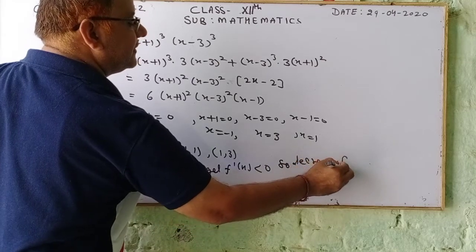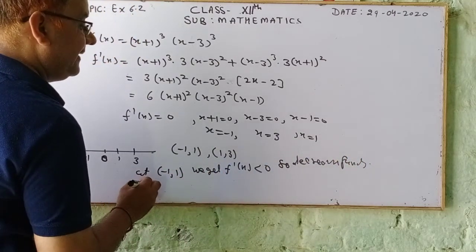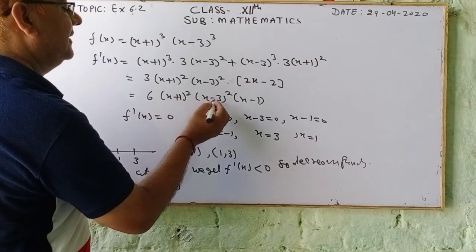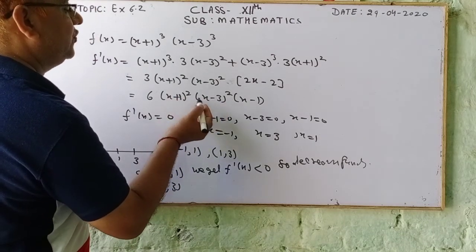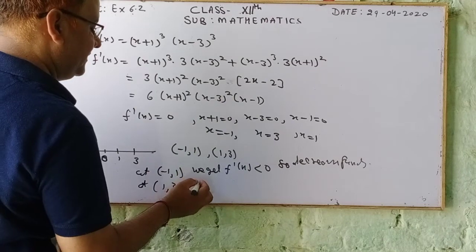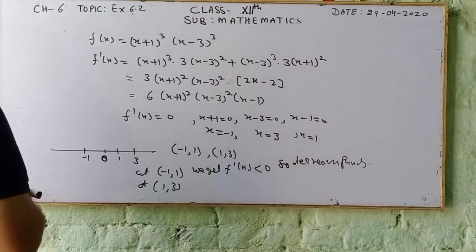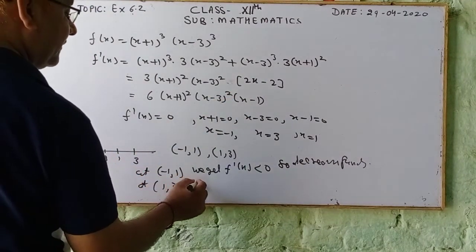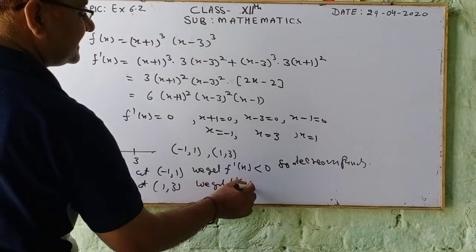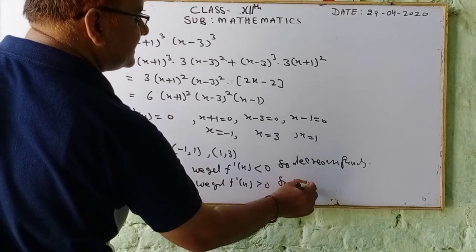For the interval (1, 3), we put in x = 2. All factors are positive: (x+1)² is positive, (x-3)² is positive, and (x-1) = 1 is also positive. So f'(x) is greater than 0, meaning the function is increasing on (1, 3).